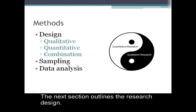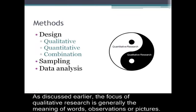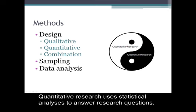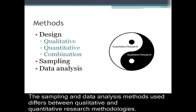The next section outlines the research design. As discussed earlier, the focus of qualitative research is generally the meaning of words, observations, or pictures. Quantitative research uses statistical analyses to answer research questions. The sampling and data analysis methods used differ between qualitative and quantitative research methodologies.